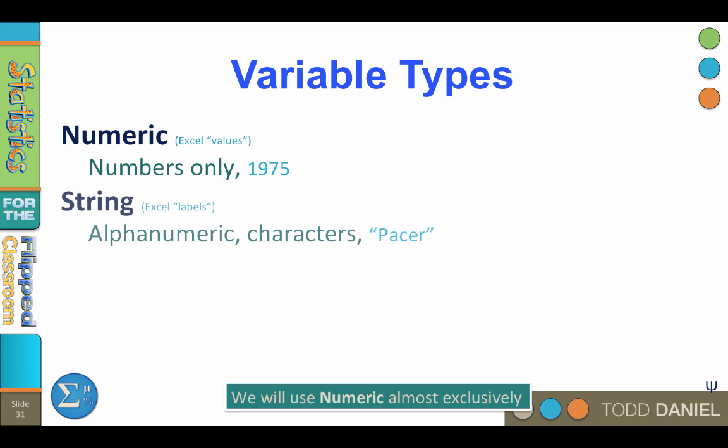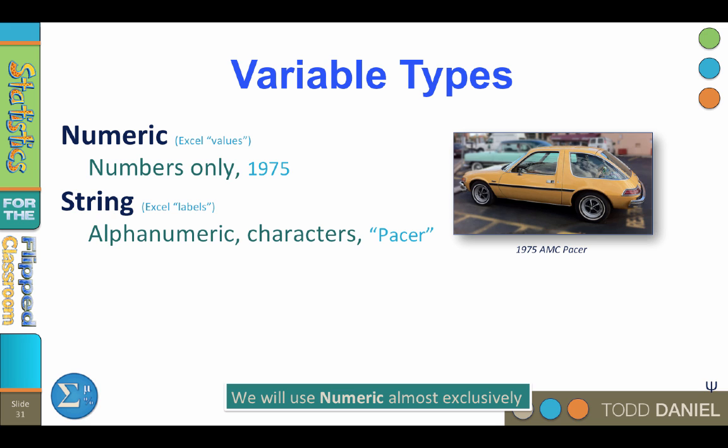The second type of variable is a string variable. String variables can include numbers, but what makes a variable a string variable is that it has at least one value somewhere that contains a letter — any letter, anywhere, and the whole variable is string. There will be times when you do want to use words or names. For example, if you list a yellow 1975 AMC Pacer, you would have a numeric variable for year (1975), a string variable for the color yellow, and another string variable for the model name Pacer.